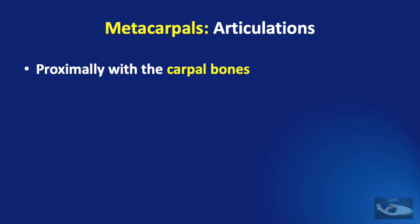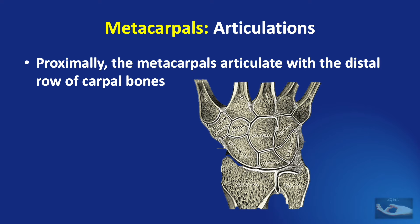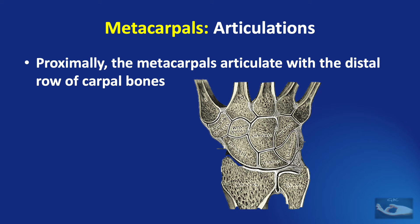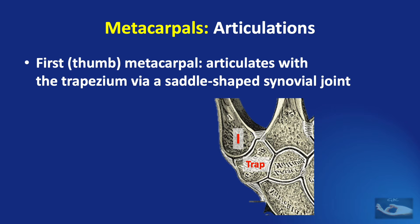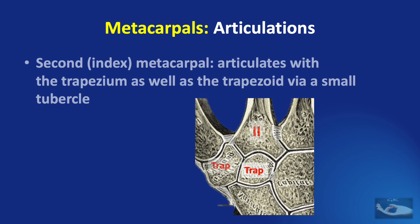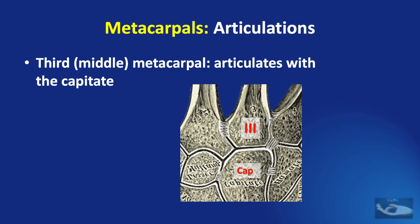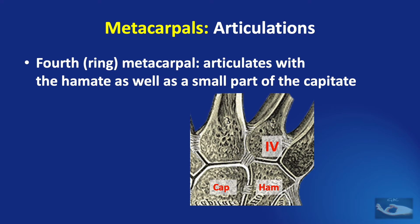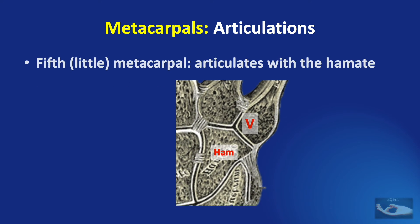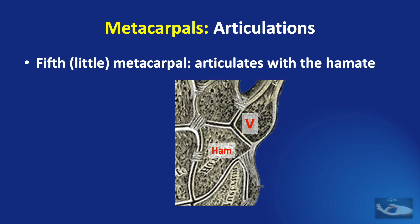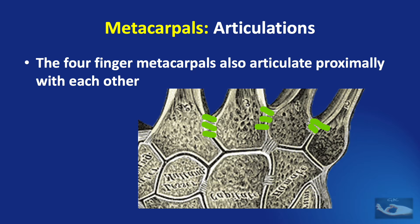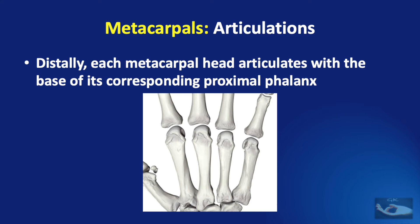The metacarpal bones articulate proximally with the carpal bones and distally with the proximal phalanges. The first metacarpal articulates with the trapezium via a saddle-shaped synovial joint. The second articulates with the trapezium and trapezoid; the third mainly with the capitate; the fourth with the hamate and part of the capitate; and the fifth only with the hamate. The four finger metacarpals also articulate proximally with each other through inter-metacarpal ligaments, and distally each metacarpal head articulates with the base of its corresponding proximal phalanx.